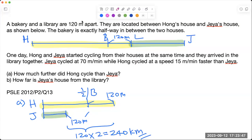Alright, let's start. A bakery and a library are 120 meters apart, which you can see here. They are located between Hong's house and Jaya's house. The bakery is exactly halfway, so this is the midpoint in between the two houses.